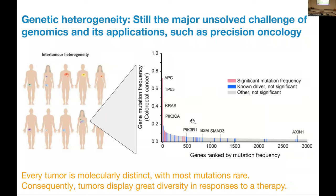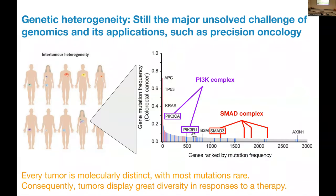For some of these genes we already know there is a strong role: PIK3R1, B2M, SMAD3, Axin1 — four genes that have a lot of evidence of involvement in the pathogenesis of colorectal cancer. The key to everything I'm going to talk about is already shown here just by looking at the gene names. PIK3R1 is the regulatory subunit of the PI3K complex, and PIK3CA is the catalytic subunit. SMAD3 is one subunit of a large transcriptional family that forms SMAD complexes, mutated in about 5% of patients, but it goes together with many others.